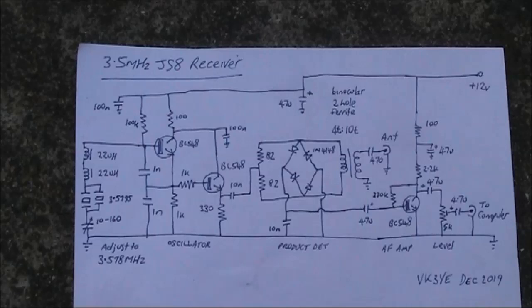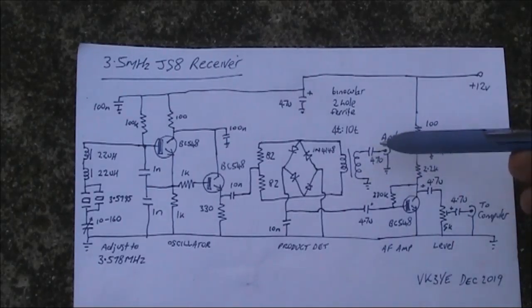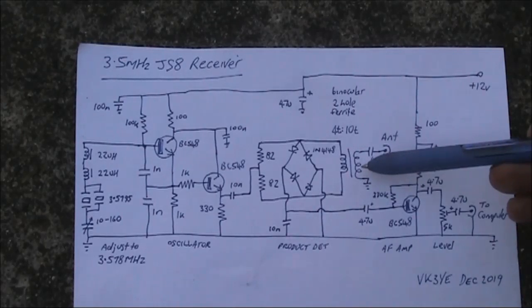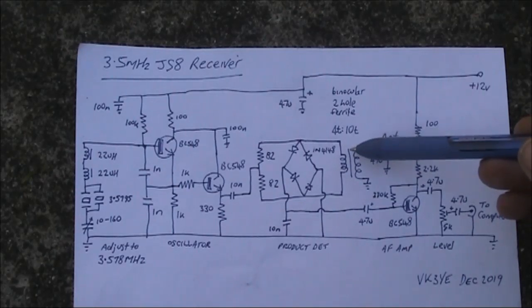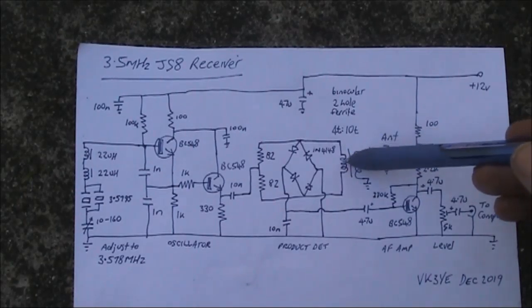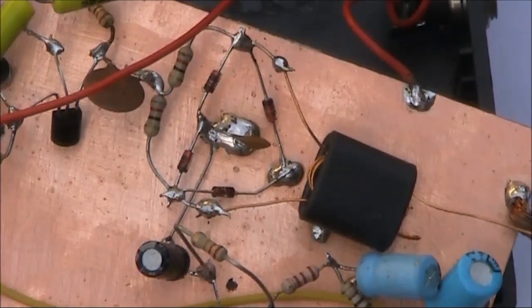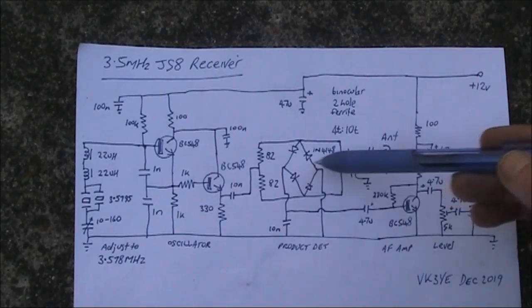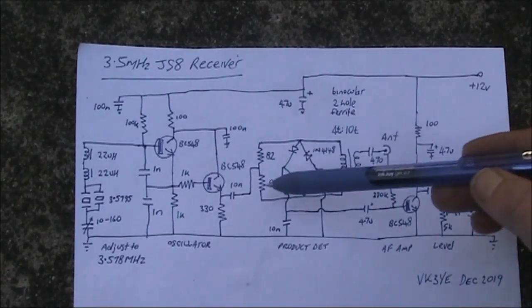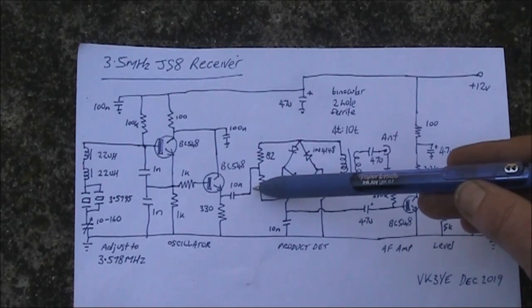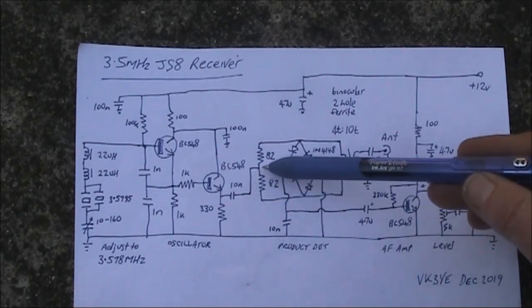You can see all this in the circuit. The incoming signal comes from the antenna. Ideally it's a full-sized antenna like a dipole or G5RV is good enough. It goes through a ferrite broadband toroid and then to this diode mixer or product detector. That mixer has two inputs. One of them is the incoming signal and the other is the locally generated 3.578 megahertz signal from the local oscillator.